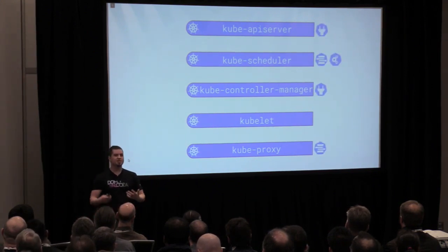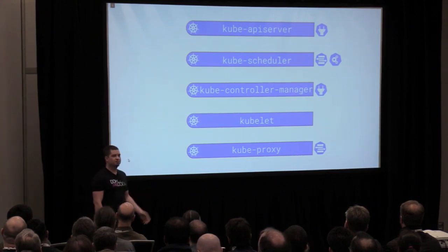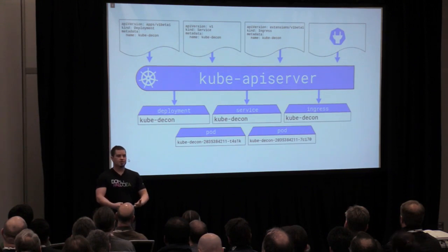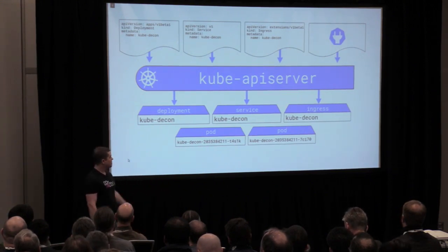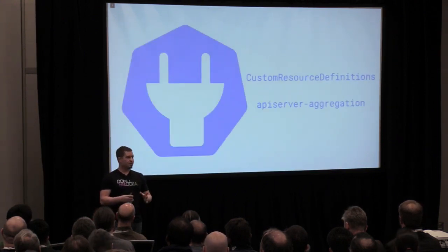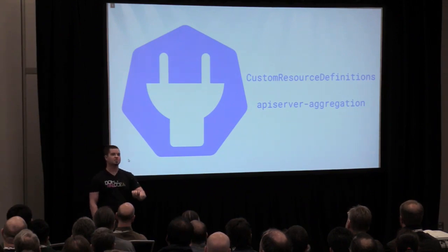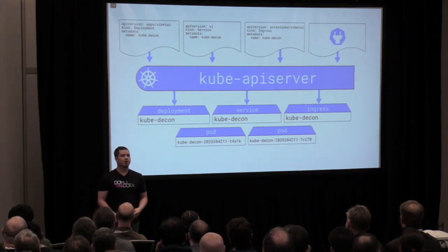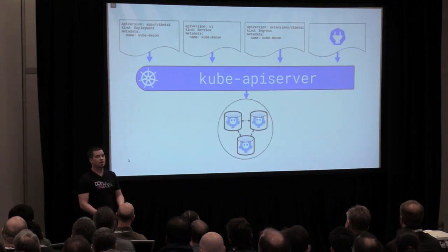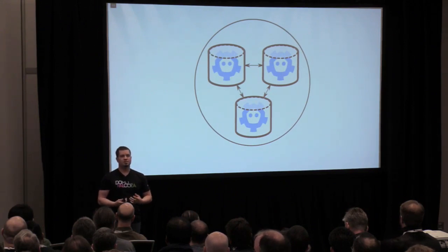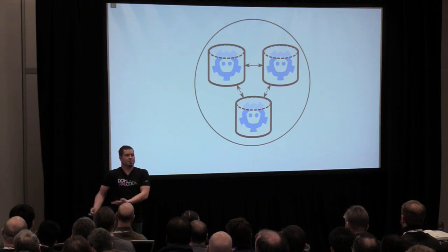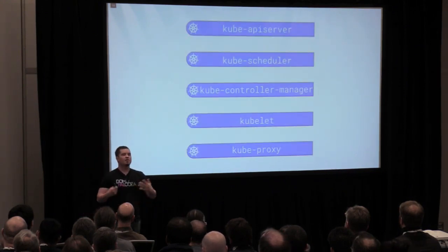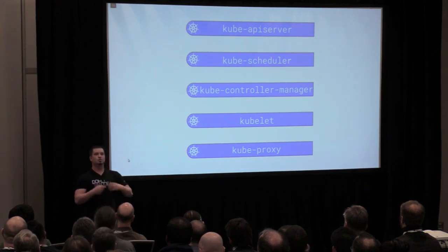Starting with the API server: when we sent our files into the API and got stuff back, that was the API server. Our first extension point here is custom resource definitions and the API server extension — really cool ways to let Kubernetes do the dirty work of adding stuff to the API. Those resources have to live somewhere, and that's etcd — or an etcd cluster more commonly. A lot of the power and reactivity of Kubernetes is just etcd features surfaced up through the API. It's distributed, fault tolerant. The API server is just the heart and veins of Kubernetes — how everything connects and talks — but it's not doing any magic itself.